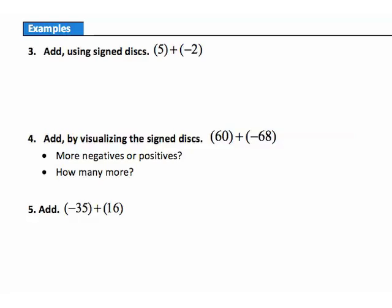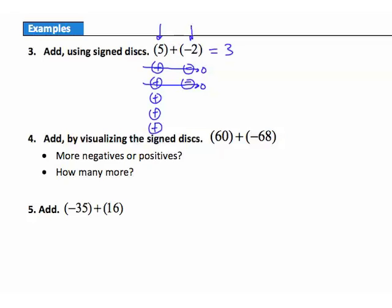Let's look at some examples for adding numbers that are opposites. Example 3: add using signed disks — positive 5 and negative 2. Starting with positive 5, I have 5 positives, and negative 2 gives 2 negatives. Every positive disk and negative disk combine to make 0: first pair gives 0, second pair gives 0. Looking at what's left, I have 3 positives remaining, so my answer is positive 3.